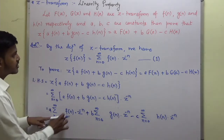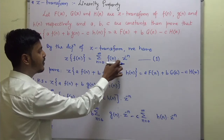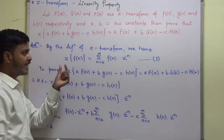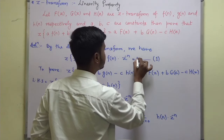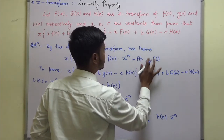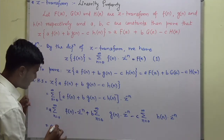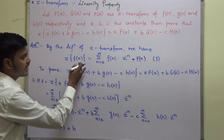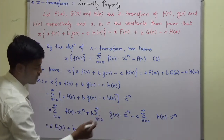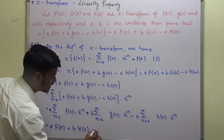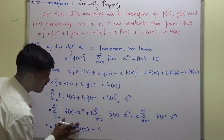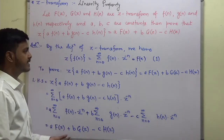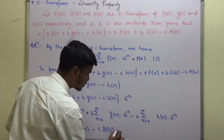Now, look at the definition: summation N equals 0 to infinity of F of N times Z to the power minus N is nothing but the Z-transform of F of N, and we are given this Z-transform of F of N is F of Z. So replacing accordingly, we get A times F of Z plus B times G of Z minus C times H of Z, which is our right-hand side.